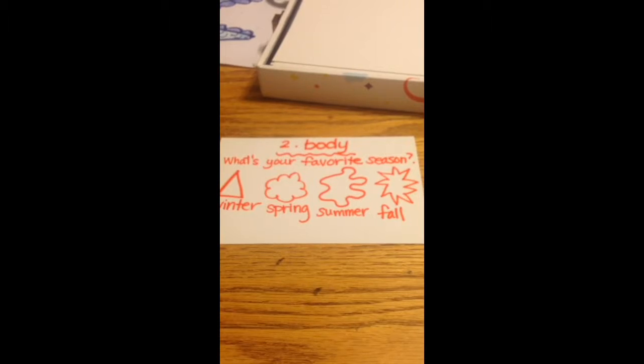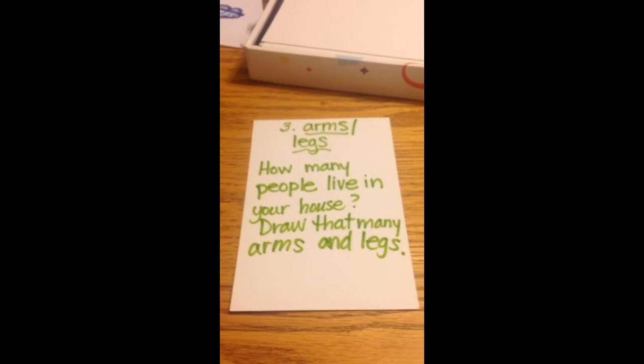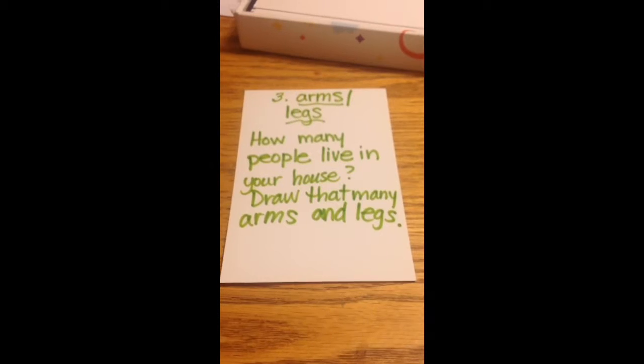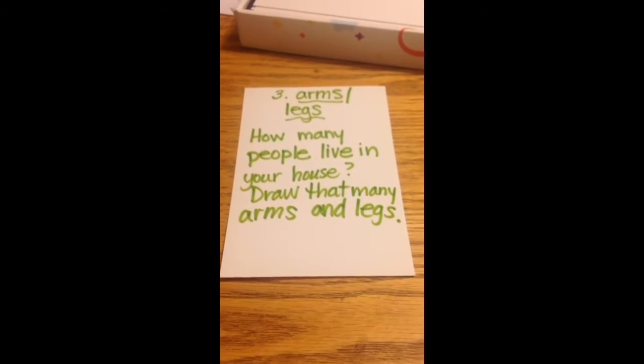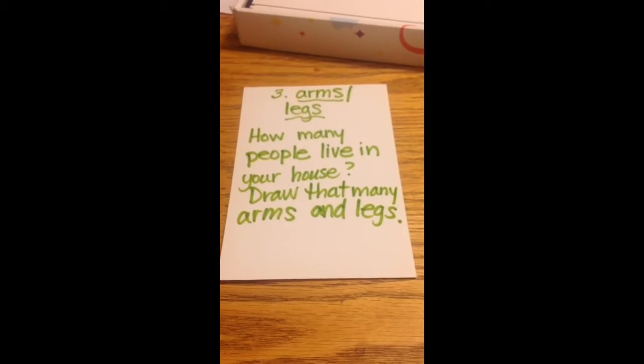Question two: what's your favorite season? If it's winter, draw a triangle body. If it's spring, you're going to draw a little cloud shape. If it's summer, you'll draw a blob. And if it's fall, you're going to draw kind of a weird pointy firecracker shape.